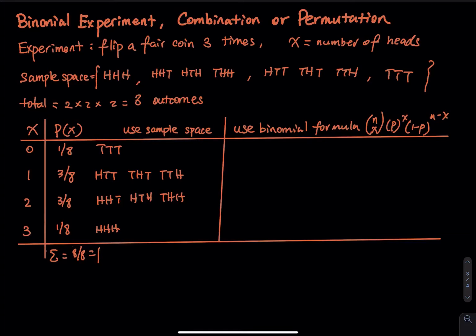Each x has its associated probability — this is the binomial distribution of the random variable x. Now we have to use the binomial formula. Why? Because this problem is small — we only have three flips. What if I flip a coin seven, ten, fifteen, or twenty times? Then the sample space will be huge, and writing outcomes by hand will take a very long time. When the number of trials is large, you cannot practically use the sample space, so we use the binomial formula.